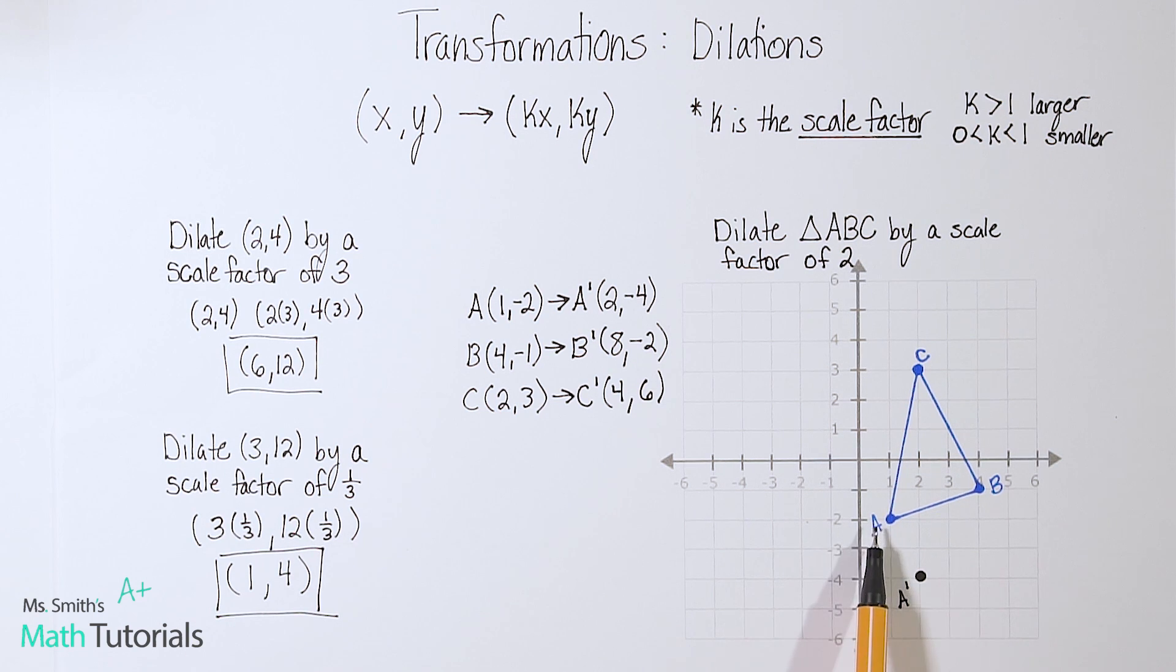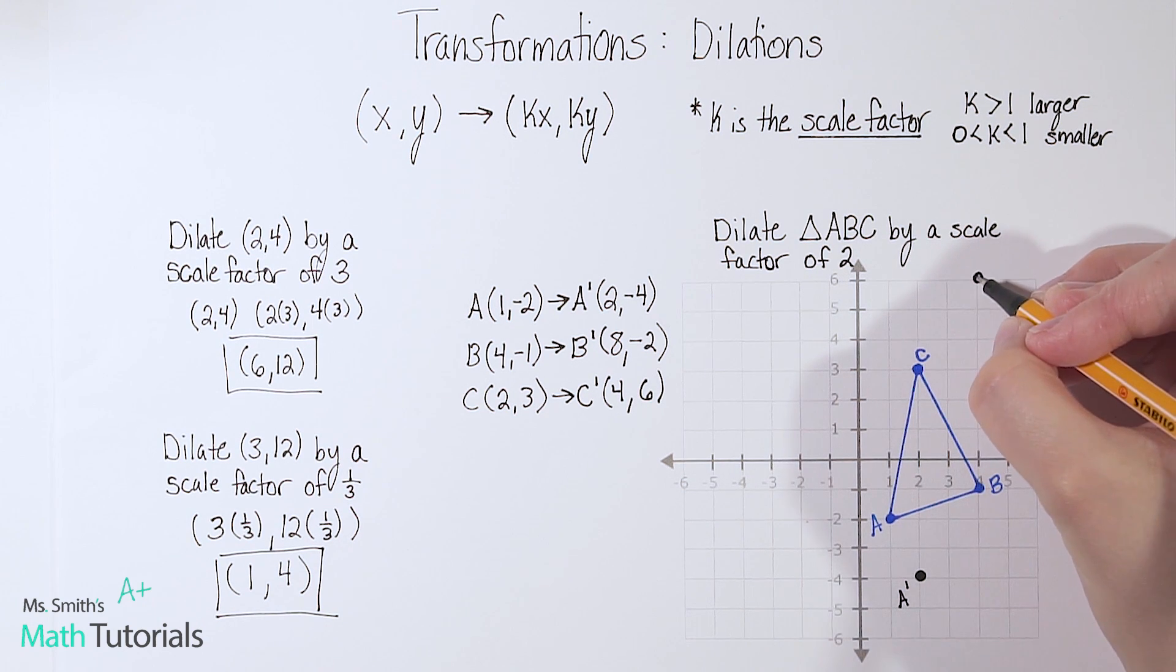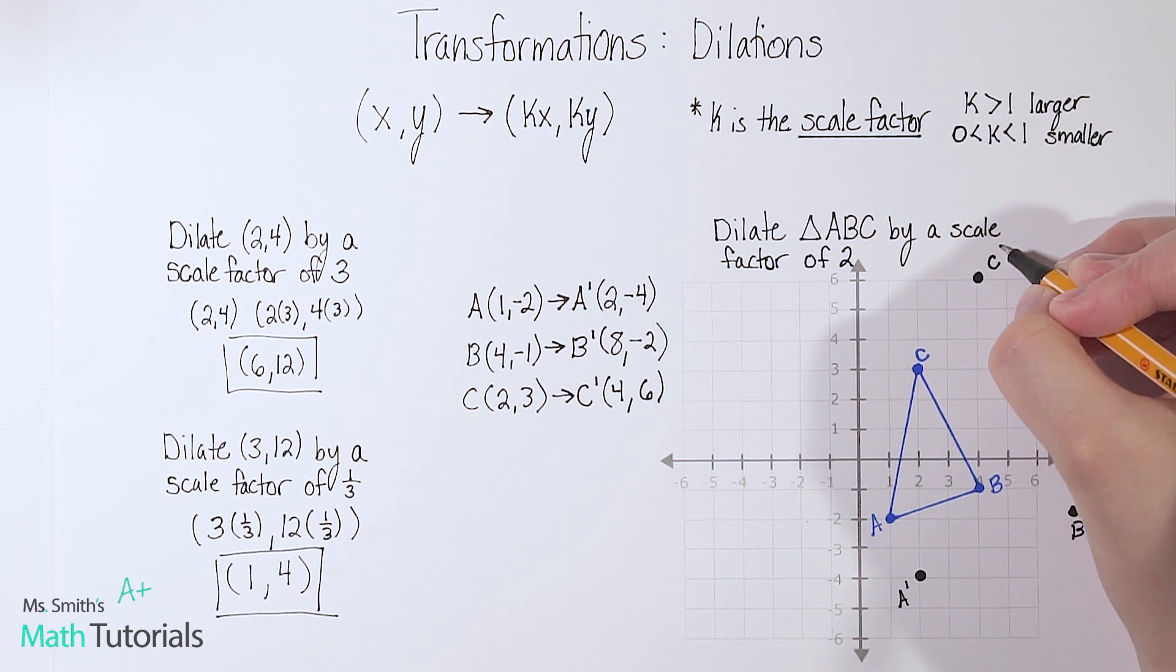So B prime, (8,-2). So I am going to have to kind of stretch this a little bit. I don't like doing that, but... So I know 8 would be approximately here. Negative 2 would be approximately here. And that is B prime. Now C prime would be (4,6). So 4 and then up 6. And that is C prime.